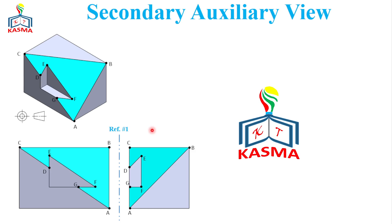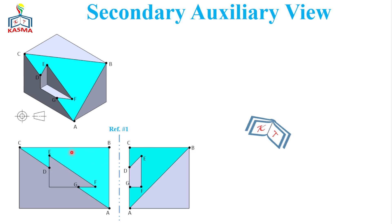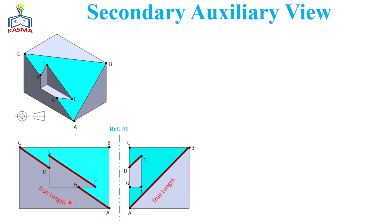Some of the edges of this oblique surface will have a true length on a view. If the layout of the oblique surface appears as an inclined line, that will be a true length. From the front view, these three lines are at true length, and from the right side view these two lines will be at true length. The first step to construct the secondary auxiliary view is identifying these true lengths.